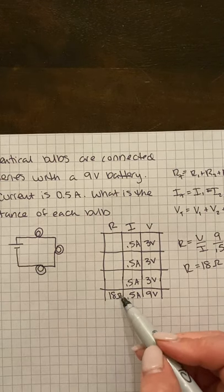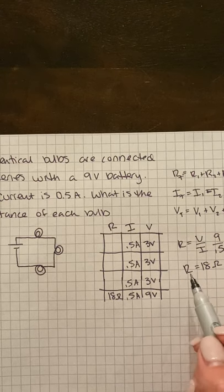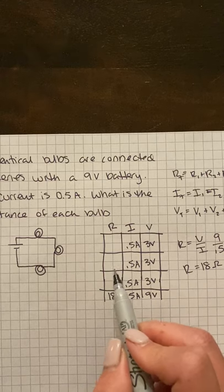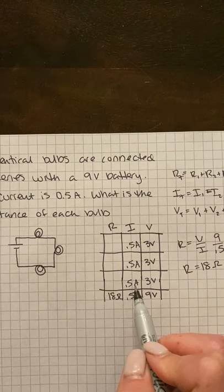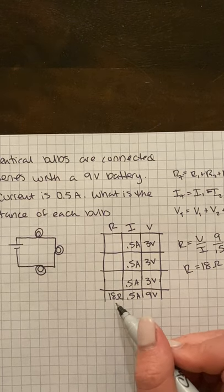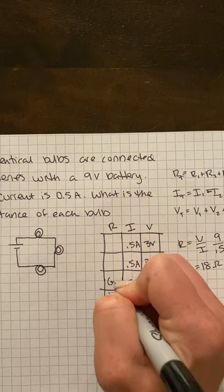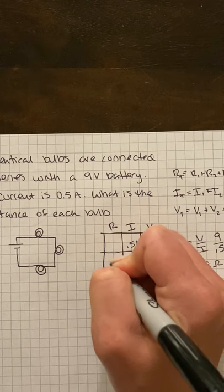And like I was saying earlier, they're identical, so each one is going to be one-third of 18. You could use also the individual voltage and current to find your resistance, or you could just take 18 and divide it by three, which will end up with 6 ohms for each of these resistors.